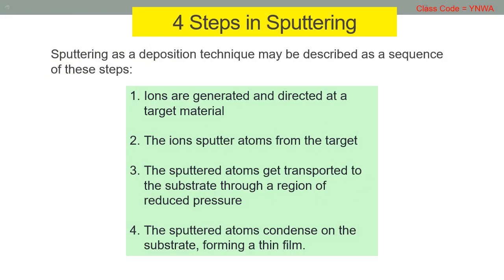There are four steps in sputtering, described as a sequence. First, ions are generated and directed at a target material. Second, the ions sputter atoms from the target. Third, the sputtered atoms get transported to the substrate through a region of reduced pressure. Fourth, the sputtered atoms condense on the substrate, forming a thin film.